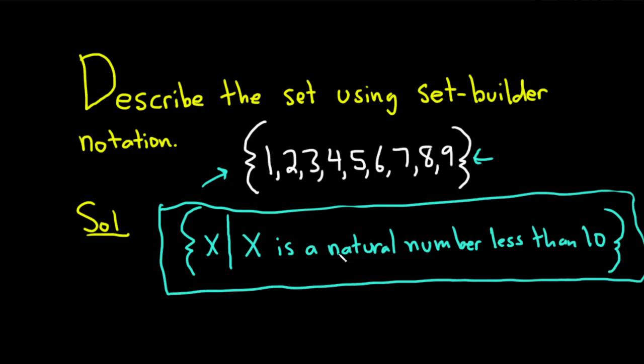1, 2, 3, 4, 5, and so on. And so these are all the natural numbers less than 10.